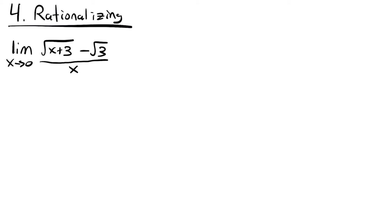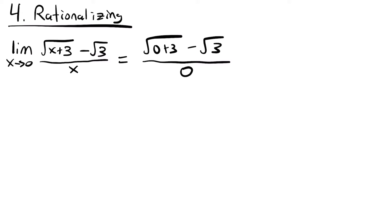Our next method is rationalizing, which is useful when we have limits involving square root functions. Here's an example: the limit as x approaches 0 of the square root of (x plus 3) minus the square root of 3, all divided by x. Plugging in 0 gives us square root of 3 minus square root of 3 over 0 — zero over zero — another indeterminate form.